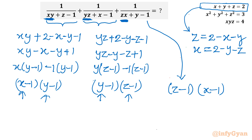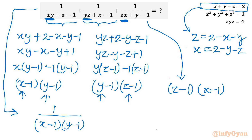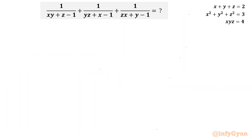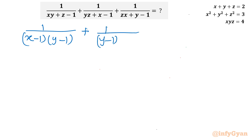Our expression now becomes: 1 over (x minus 1)(y minus 1), plus 1 over (y minus 1)(z minus 1), plus 1 over (z minus 1)(x minus 1).